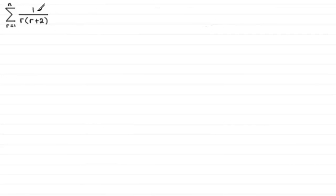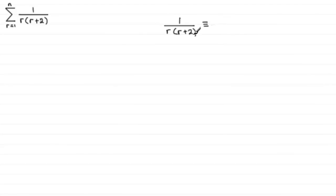If we've got a fraction like this that can be split into partial fractions, then we do that — assuming you are familiar with partial fractions. We have two linear factors, and we can say this is identical to a constant A over the first linear factor r, plus another constant B divided by the other linear factor r+2.